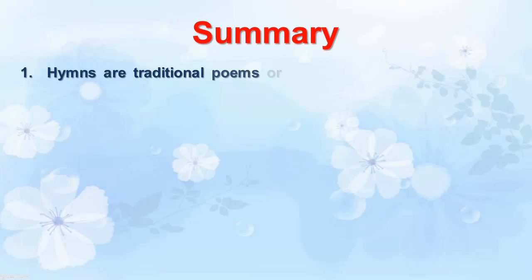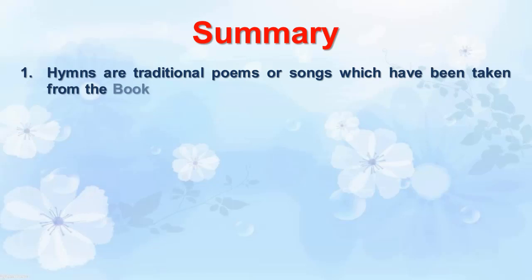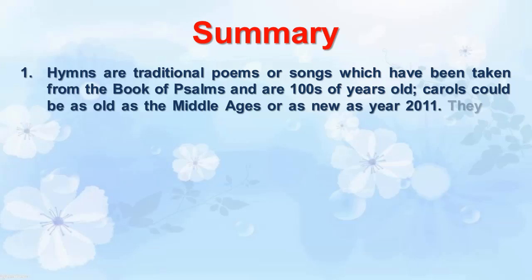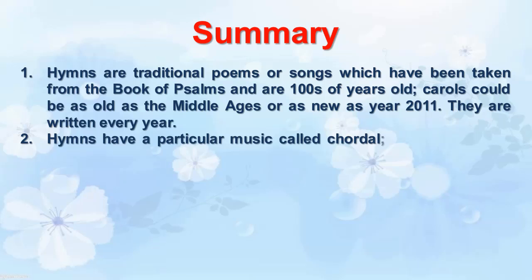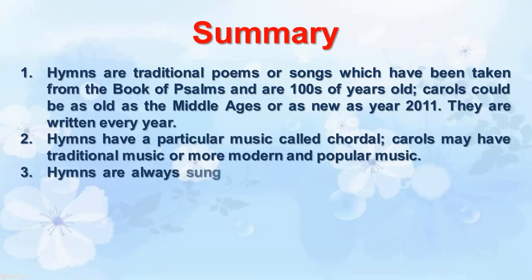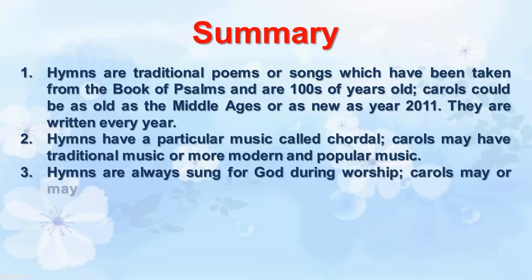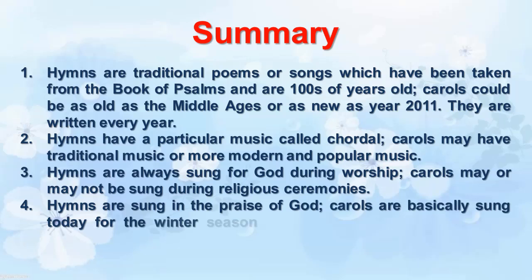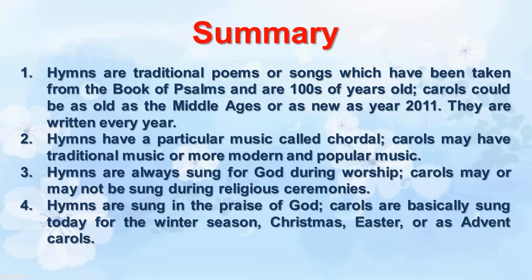In summary: hymns are traditional poems or songs taken from the book of Psalms and are hundreds of years old, while carols could be as old as the middle ages or as new as 2011 and are written every year. Hymns have a particular music called chordal; carols may have traditional or more modern and popular music. Hymns are always sung for God during worship, while carols may or may not be sung during religious ceremonies. Hymns are sung in the praise of God; carols are sung today for the winter season, Christmas, Easter, or as Advent carols.